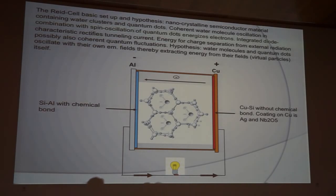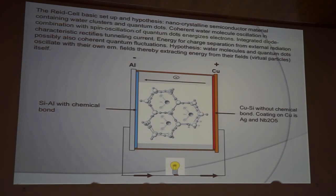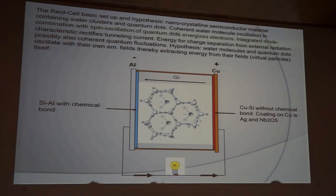So what I'm showing here is the basic setup of the read cell and hypothesis. There's a nanocrystalline semiconductor material containing water clusters and quantum dots. The coherent water molecule oscillation in combination with spin oscillation of quantum dots energizes electrons. The integrated diode characteristic rectifies the tunneling current. The energy for the charge separation comes from external radiation, possibly also coherent quantum fluctuations. The hypothesis is the water molecules and quantum dots oscillate with their own electromagnetic fields, thereby extracting energy from the fields or virtual particles itself.